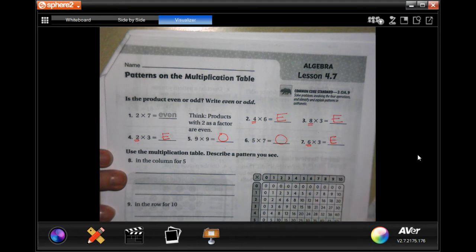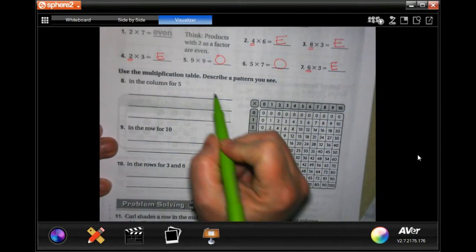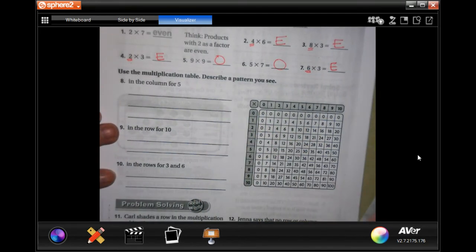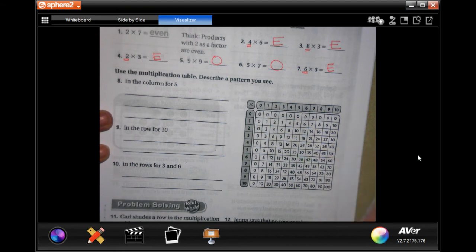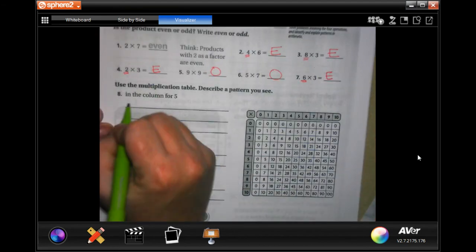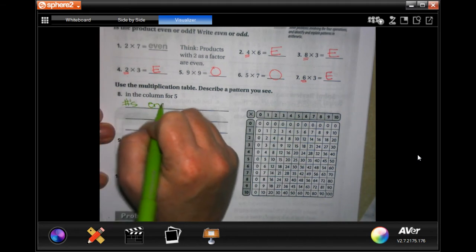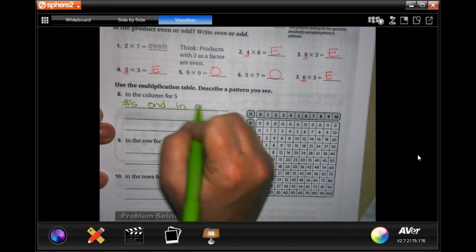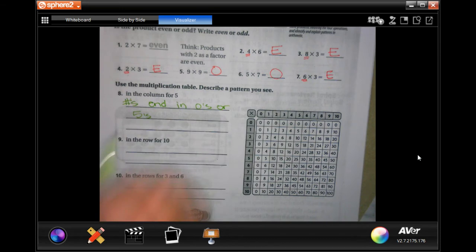All right, use the multiplication table to describe the pattern you see. So in the five column you're going to see zero five, zero five, zero five. So the numbers end in zeros or fives.